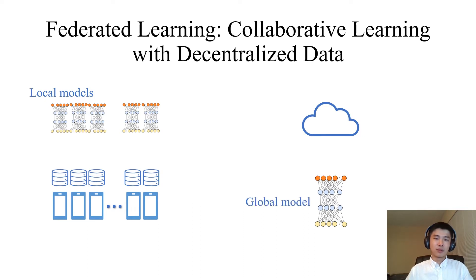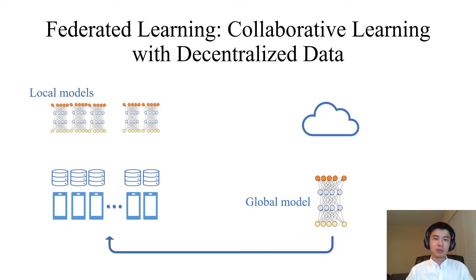The goal of federated learning is to learn a good global model without sharing private local data with the master. To achieve this, federated learning performs three steps in each iteration. In the first step, the master sends the global model parameters to the workers, and the workers update their local models to the global model.